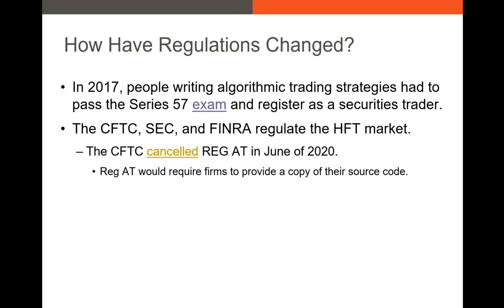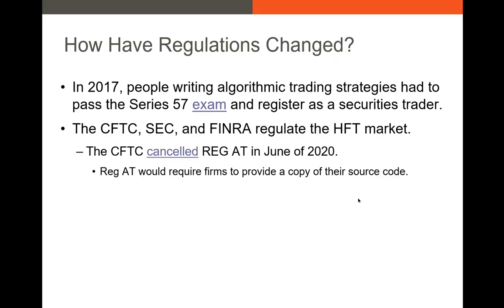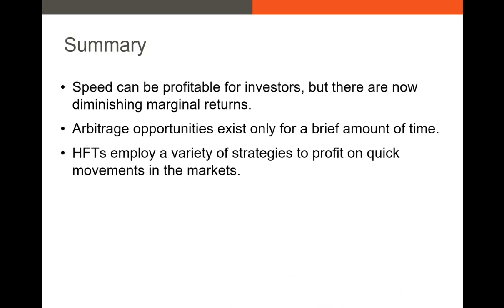The second piece of regulation was Reg AT, which had many components, but the most impactful for high frequency traders would have required them to provide a copy of their source code — the actual code they use to trade on the markets. This was kicked around for several years until June 2020, when the CFTC commissioner put it to a vote. On June 25th, 2020, the five CFTC commissioners voted three to two to withdraw Reg AT, meaning high frequency traders do not have to provide their source code.